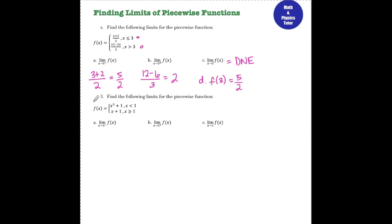For number three, find the following limits for the piecewise function. For the limit as x approaches 1 from the left, I use the x cubed plus 1 piece and plugging in 1 I get 2. For the limit as x approaches 1 from the right, I use the x plus 1 piece and plugging in 1 I also get 2. Since the limit from the left equals the limit from the right, the limit as x approaches 1 is 2. That's it for finding limits of piecewise functions. If you have any questions feel free to leave them in the comments below.